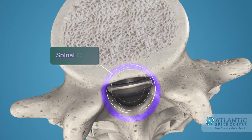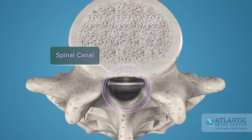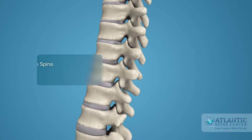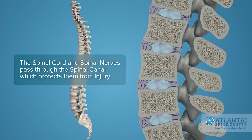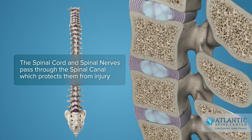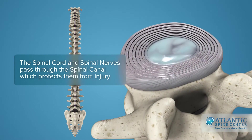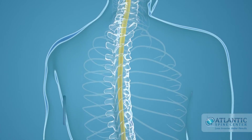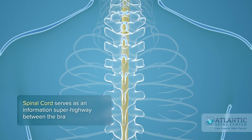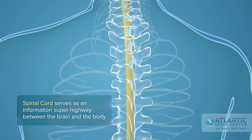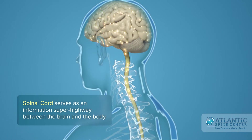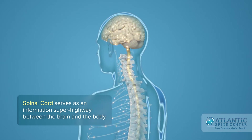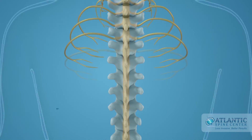Directly behind the discs, the ring-like vertebral bodies create a vertical tunnel called the spinal canal or neural canal. The spinal cord and spinal nerves pass through the spinal canal, which protects them from injury. The spinal cord is the major column of nerve tissue that is connected to the brain and serves as an information superhighway between the brain and the body.